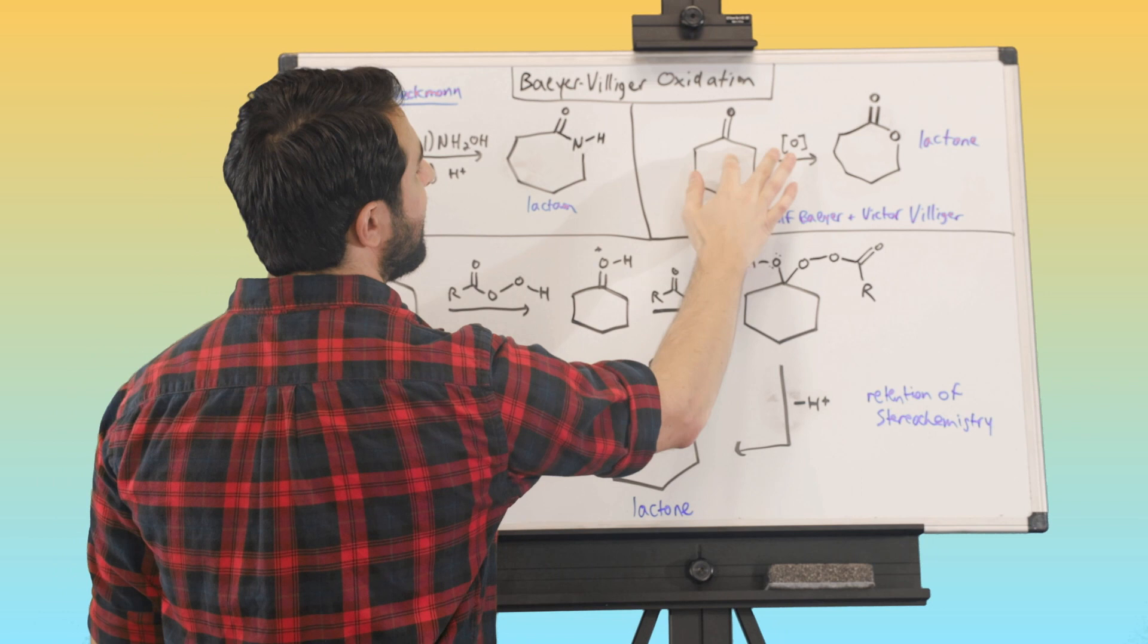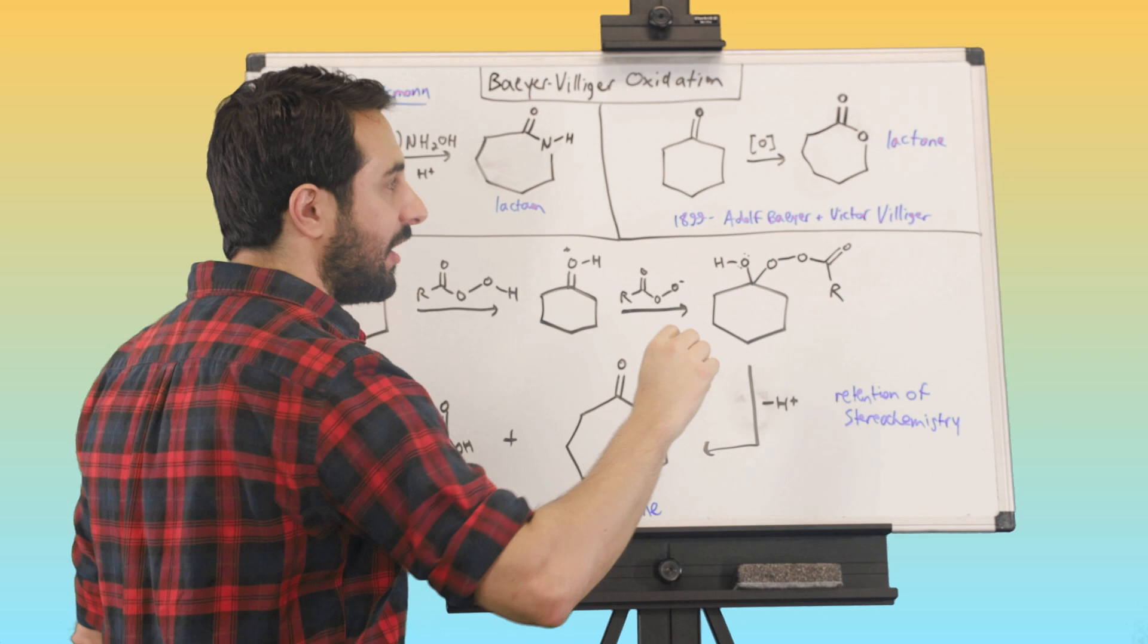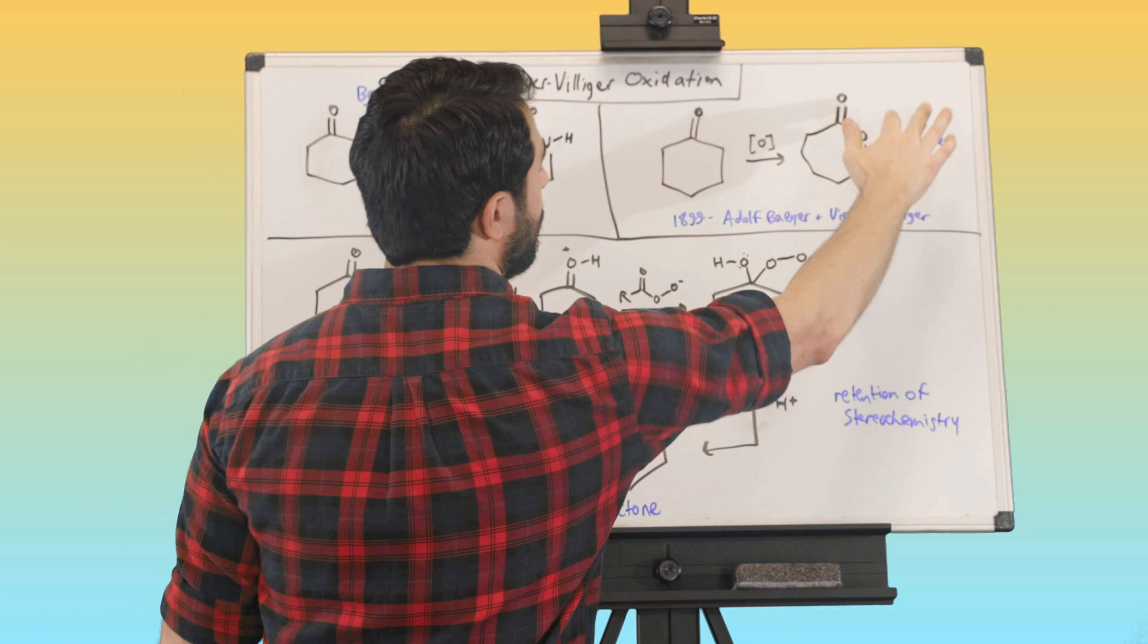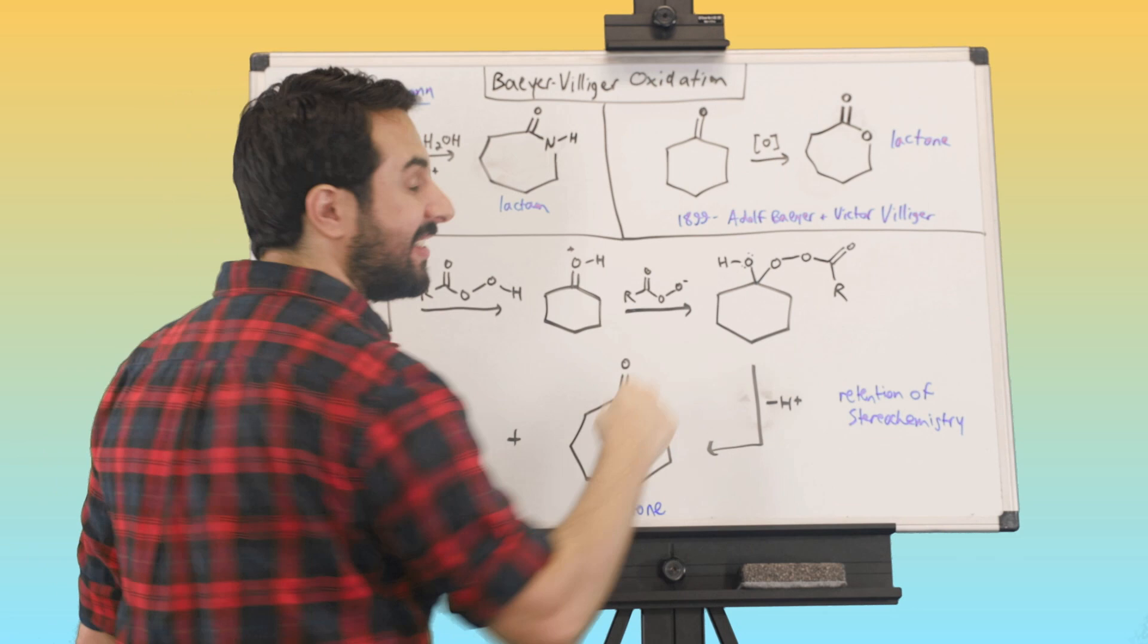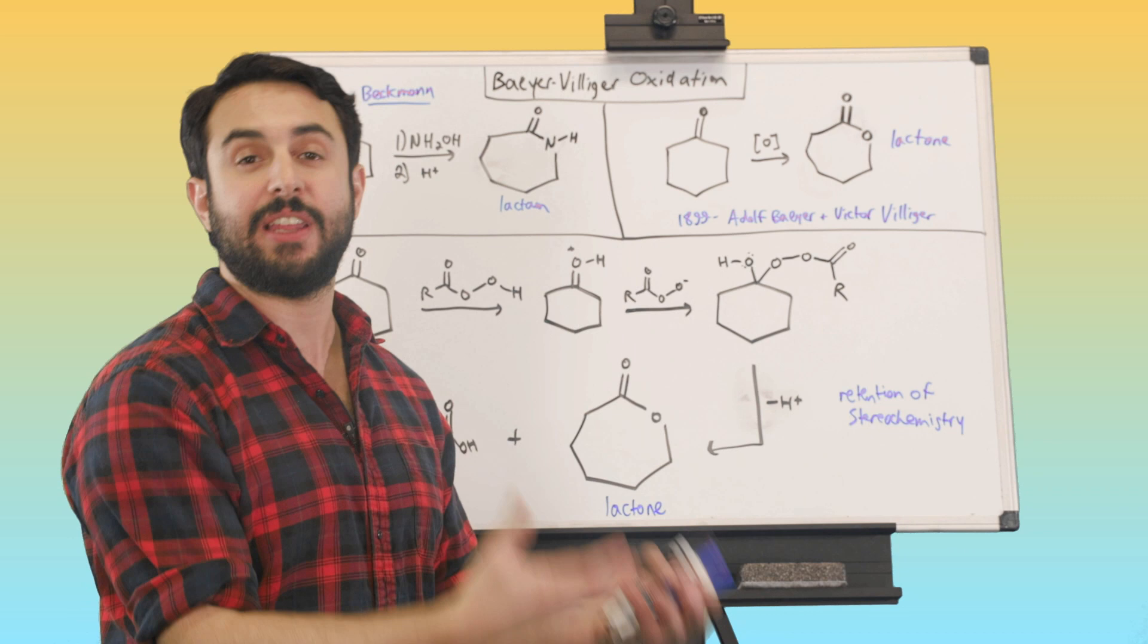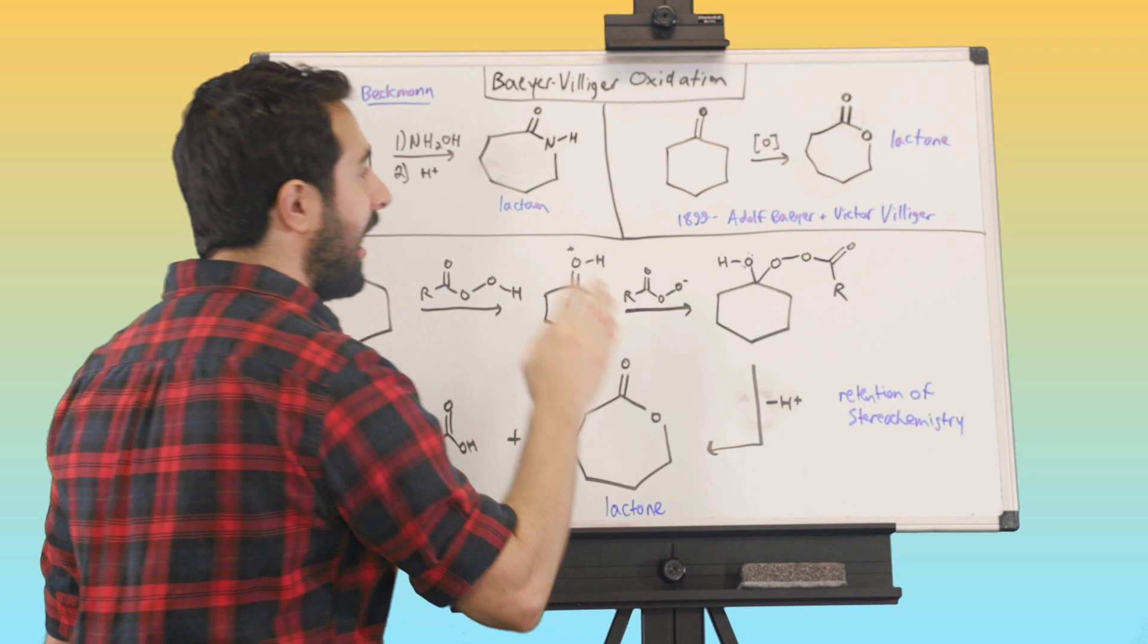We're going from that same substrate, cyclohexanone, to a seven-membered ring, which is a cyclic ester, and a cyclic ester is called a lactone, right? So we've got this lactone. So this is very useful if you want to go from a ketone to an ester, or from a cyclic ketone to a lactone, and in particular if we want to form a seven-membered ring, because that's a little bit harder to make than six-membered rings. Six-membered rings form very readily because they're the most stable kind of ring we can get. So this is an interesting way to make a seven-membered ring. So let's take a look at the mechanism here.